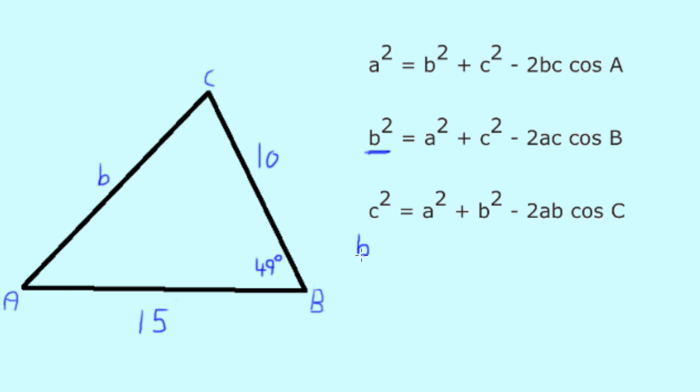So with the information we have, we know b squared will equal 10 squared where our side is 10, plus 15 squared where our side c is 15, minus 2 times our side 10 times our side c 15, times again by the cosine of 49, which is our angle b.